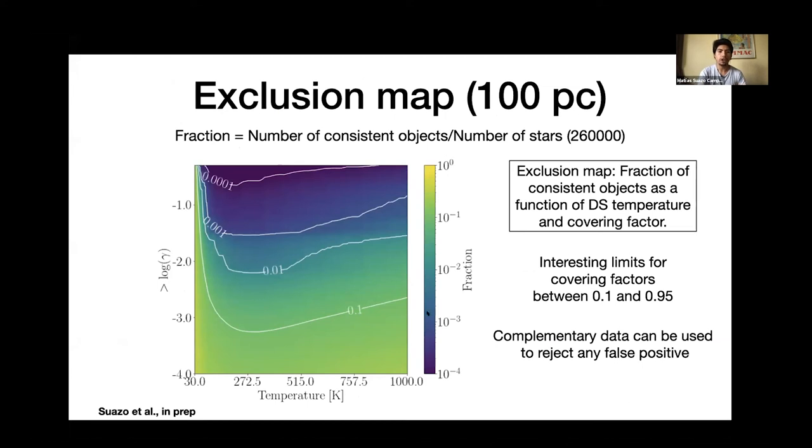So then we did exactly the same for a huge range of covering factors and temperatures of Dyson spheres. And we gather all this information in this plot called the exclusion map. In this plot, on the x-axis, we have the temperature of the Dyson sphere and we have the covering factor on the y-axis. And the color represents the fraction that are consistent with this type of Dyson sphere. You can see that for low covering factors, the fraction is very close to one. And that happens because to have a low covering factor is equivalent to have a transparent Dyson sphere and all the stars are compatible with transparent Dyson sphere. Also, when we have very cold stars, also the fraction is the same. It's close to one, but that happens because when we have very, very cold Dyson sphere models, the radiation falls in the far infrared and is not in the detectability region of the WISE bands. However, we got very interesting limits in this region for covering factors between 0.1 and above and temperatures between 100 and 600 Kelvin.